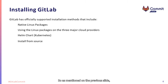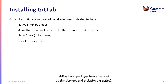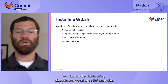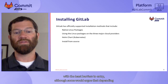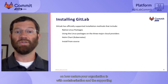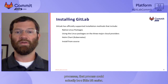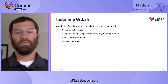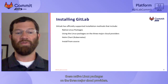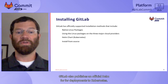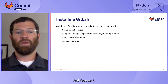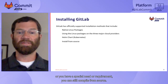GitLab does support a handful of installation methods. Native Linux packages are the most straightforward and probably the easiest with the least barriers to entry, although some would argue that depending on how mature your organization is with containerization, that process could actually be a little bit easier. GitLab does support these native Linux packages on the three major cloud providers, and also publishes an official Helm chart for deployments to Kubernetes. If you have a special need or requirement, you can still compile from source.